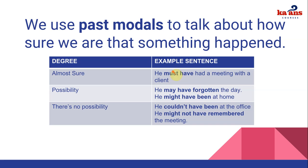For example: 'He must have had a meeting with a client.' Imagine you're at work looking for John. You ask a co-worker, and Frank says, 'He must have had a meeting with a client' — because Frank is almost sure he remembers John had an important event. So we use 'must have' when we're almost certain.